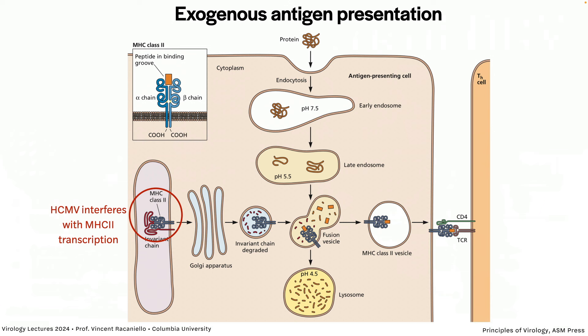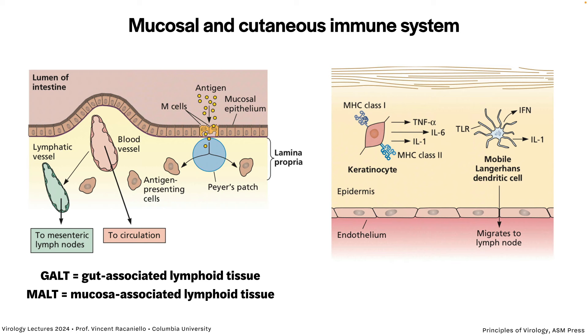The dendritic cell has to migrate from the infected area to the lymph node via lymph capillaries. Some viruses interfere with this pathway — you have to infect the sentinels like dendritic cells and macrophages to do so. Human cytomegalovirus infects these cells and interferes with transcription of MHC 2, which blocks antigen presentation so T cells are not activated. These viruses then establish persistent infections because they can't be cleared.